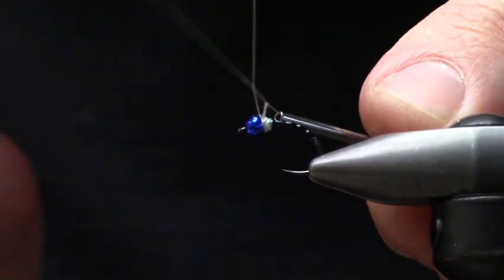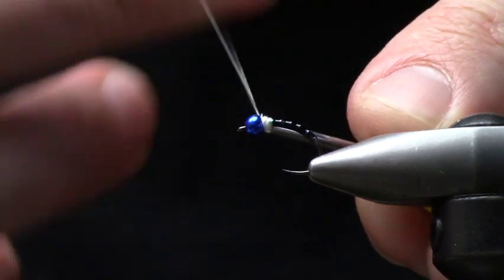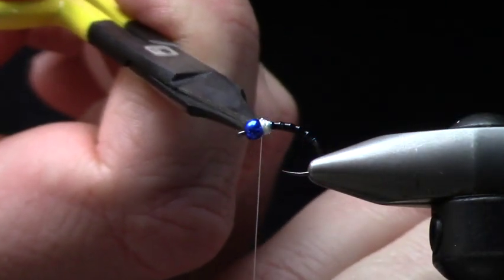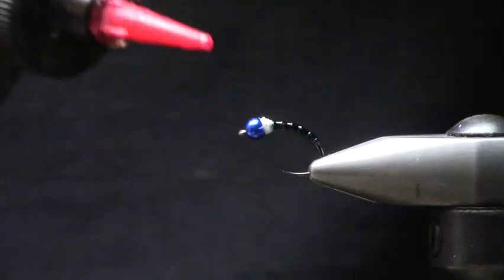But on our tailwater here which is the Lower Stack, it started working pretty well. And these midges will come off from a 14 to a 20 here. All winter long we're just fishing such small flies.